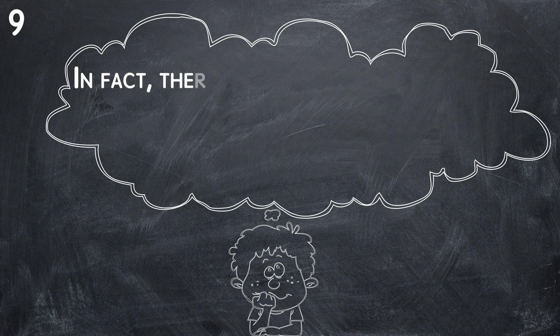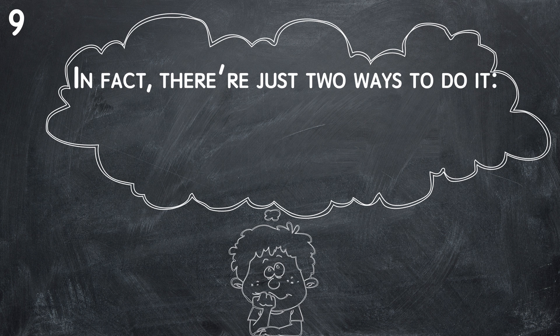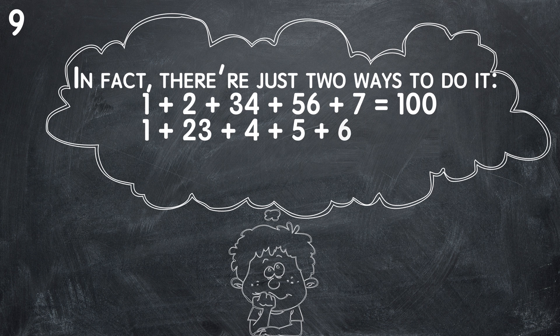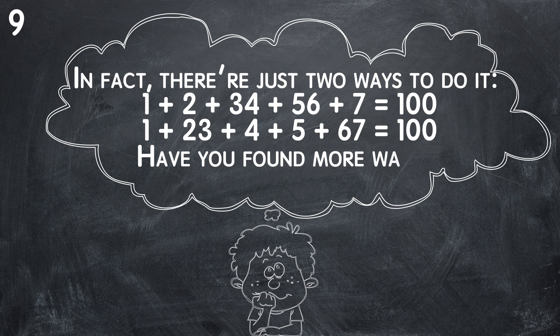In fact, there are just two ways to do it. 1 plus 2 plus 34 plus 56 plus 7 equals 100. And 1 plus 23 plus 4 plus 5 plus 67 equals 100. Have you found more ways? Share them in the comment section.